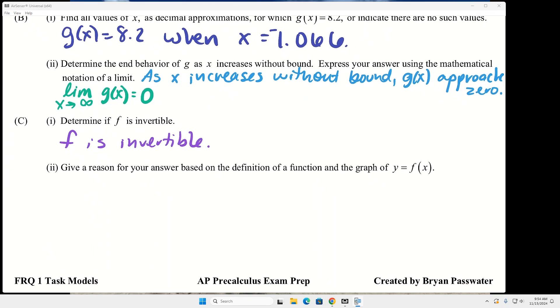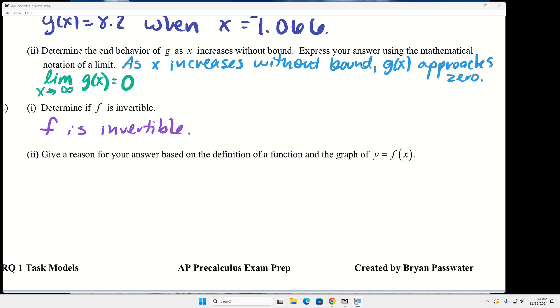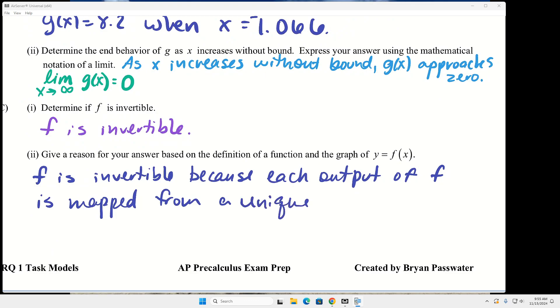And then part two is why. So you have to be really careful. We can't say f is invertible because it's a one-to-one function. We can't say because it passes the horizontal line test. We have to talk about output and input. So f is invertible because - do you guys remember? Every output is mapped from a unique input. Perfect. For every output value - you're right - each output value of f is mapped from a unique input value. Now, if you did say exactly like you said, every output is mapped from a unique input, that's fine, that's perfect. They're not going to be that picky.